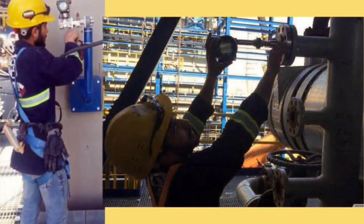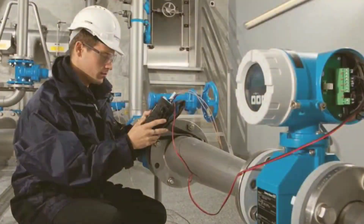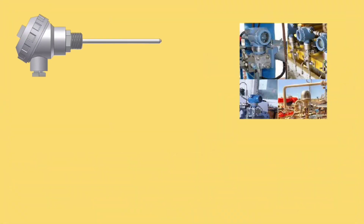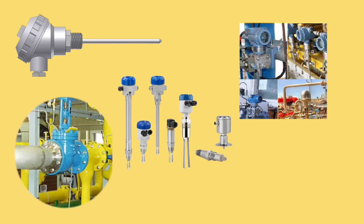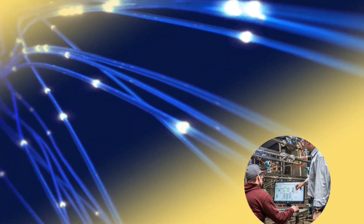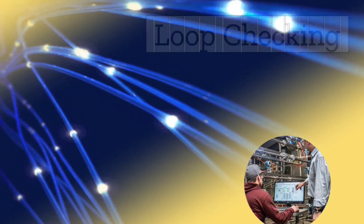Getting the instruments operated properly after installation is called commissioning. This means checking whether whatever transmitters, RTD, thermocouple, switches, and control valves we have installed — their signal is being shown on PLC-DCS or not. All this is seen in commissioning. There are many signals which are not properly shown, so loop checking is also done for this.